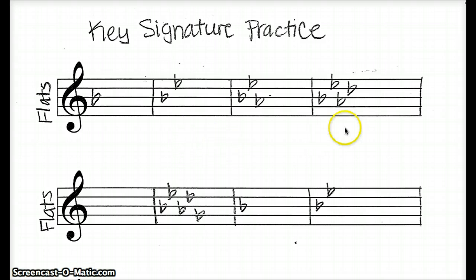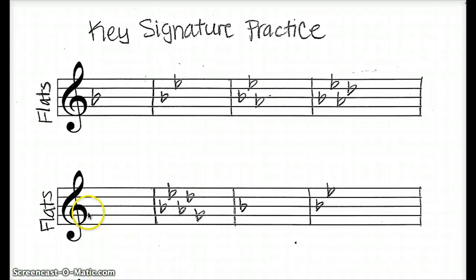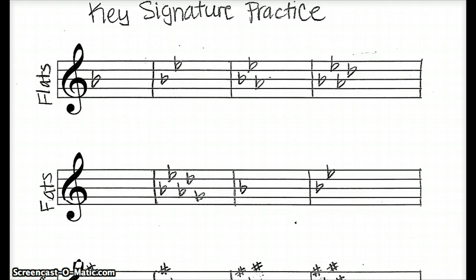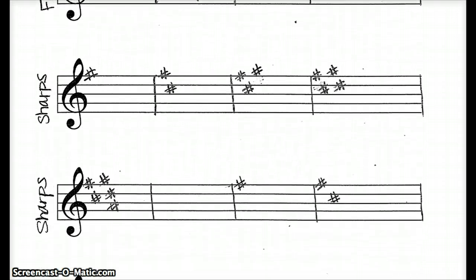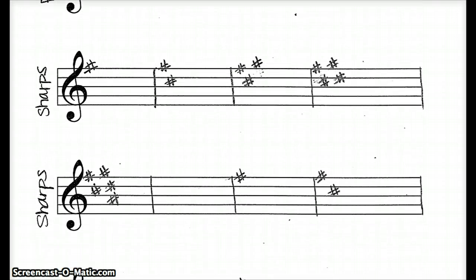So you're going to continue on in that same fashion. When you get to this one, remember, if there's no sharps and flats, what key are you going to be in? That's actually back to rule number 1, so don't forget about that. When we come down to the sharps, remember the rule: you're going to find the last sharp and go up one letter in the alphabet.